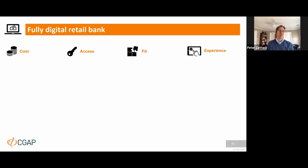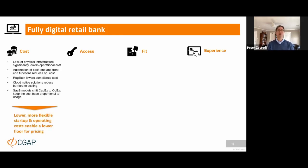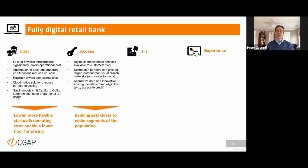He speaks very eloquently to the much wider role that digital technologies can play in the transformation of banking beyond cost alone. To close out the conversation on fully digital retail banks, I wanted to come back to our inclusion lens. The first element clearly is cost — the lack of branches, automation, and cloud-native solutions create significant cost advantages both to enter the space and to scale up over time. When it comes to access, digital channels clearly make services more available to people, partnerships with retail partners can create far larger footprints than traditional banks have, and innovative scoring models expand eligibility.